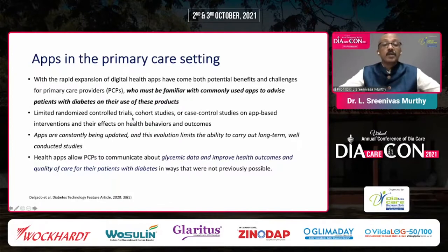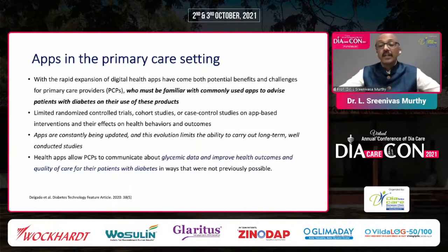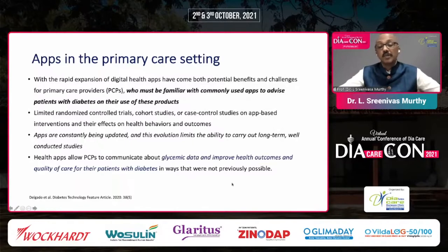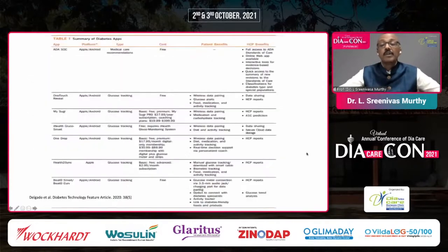There are limited randomized controlled trial studies because, as mentioned earlier, apps are regularly updated with newer versions, which limits the ability to check their long-term efficacy. Digital apps allow primary care providers to communicate about glycemic data and improve health outcomes in ways not previously possible. Thanks to COVID, digital literacy rates among our medical community have definitely increased.